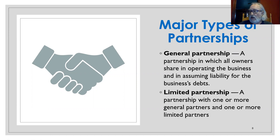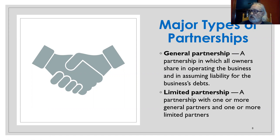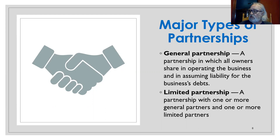Each type of partnership has its own disadvantages and advantages. But in a general partnership, all the resources are pulled together, and at the same time, all the liability is spread amongst the various partners. However, this type of partnership has a downside of the possibility for a lot of disagreement amongst those general partners, generally based on personality conflicts or different agendas.